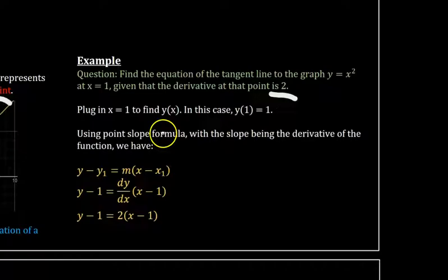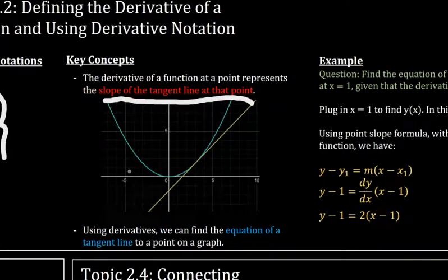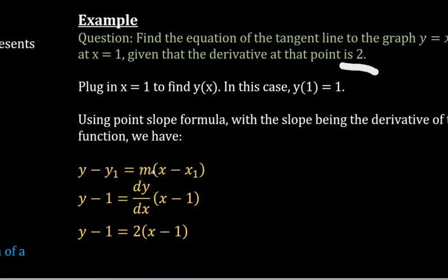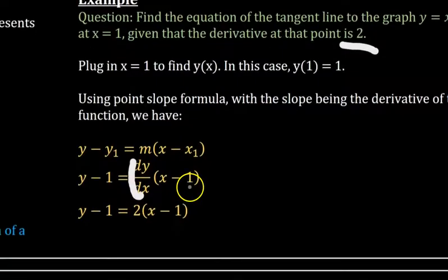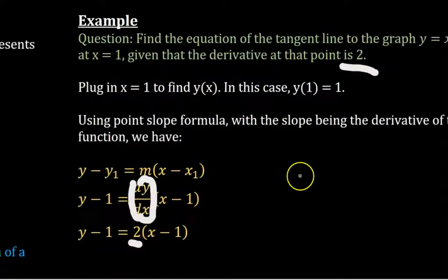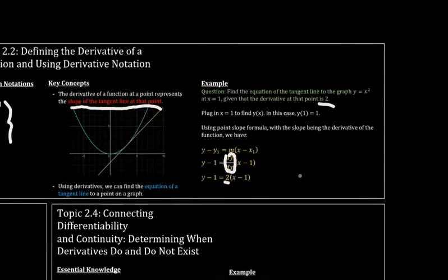So we plug in x equals one to solve for y1 and y1 is actually one, and x1 is one as well. And then based on what we just learned that the slope of the tangent line is the derivative, we know that the derivative is two because it's given to us. So using the derivative here and plugging in two we can solve for the equation of the tangent line.